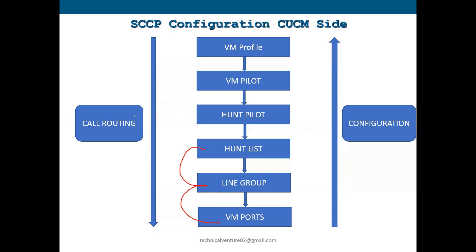This is the routing. For the configuration, you need to start from the bottom up — as shown on the right side of the screen. First, create the voicemail ports. Once configured, you can create the line group and add those voicemail ports. Then create a hunt list containing that line group. Before creating the hunt list, you should have a line group; before creating the line group, you should have voicemail ports.